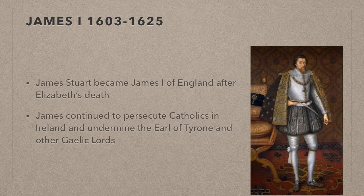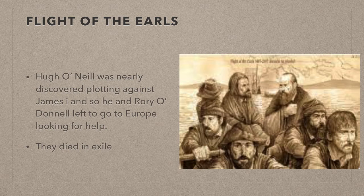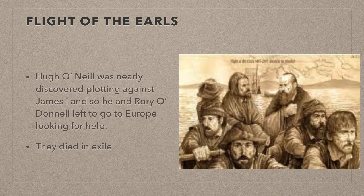Elizabeth was replaced as Queen by her cousin the King of Scotland, who became King James the First of England — the first of the Stuart kings. The Irish hoped that James being Scottish would be more sympathetic to them, but James decided on a policy of persecuting the Catholics and constantly undermining the Earl of Tyrone and the Gaelic Lords. The Irish Earls decided to leave Ireland to try to get help in Europe after O'Neill was nearly discovered plotting against James the First. They looked for somebody in Europe to send an army to support them, but they eventually died in exile, never to return to Ireland. This event is known as the Flight of the Earls, and when they left the English confiscated their lands.